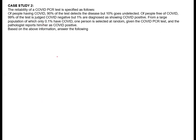Let us read the question again mindfully. For people having COVID, 90% of the test detects the disease but 10% goes undetected. For people free of COVID, 99% of the test is judged COVID negative, but 1% diagnosed as showing COVID positive. From a large population of which only 0.1% have COVID, a person is selected at random, given the COVID PCR test, and the pathologist reports him or her as COVID positive. So certainly this question is based on Bayes' theorem.